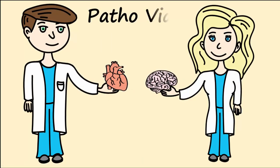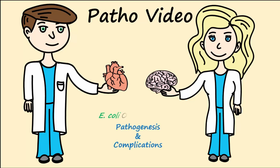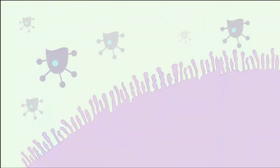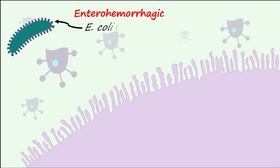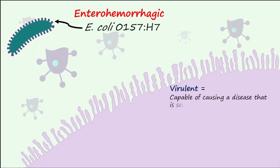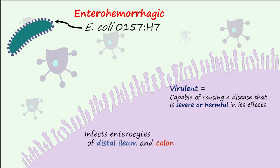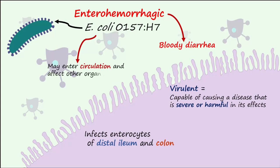Welcome to another patho video. Let's talk about the pathogenesis and complications of E. coli O157:H7. Enterohemorrhagic E. coli O157:H7 is a virulent bacteria capable of infecting the enterocytes of the distal ileum and colon. An infection can bring about bloody diarrhea and also enter the circulation to affect other organ systems.